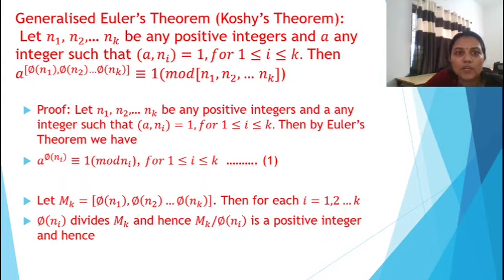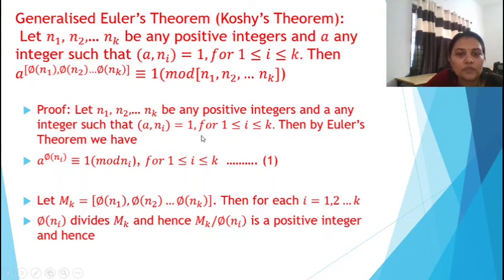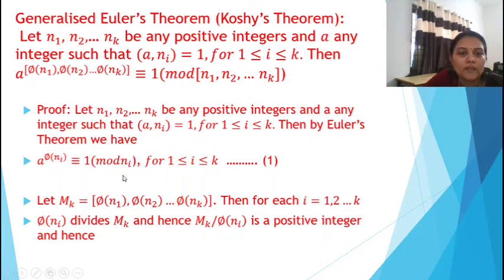Now we have the Generalized Euler's theorem, also called Cauchy's theorem. Let n₁, n₂, ..., nₖ be positive integers and let a be any number such that gcd(a, nᵢ) = 1 for 1 ≤ i ≤ k. Then by Euler's theorem, we have a raised to φ(nᵢ) congruent to 1 mod nᵢ for 1 ≤ i ≤ k.